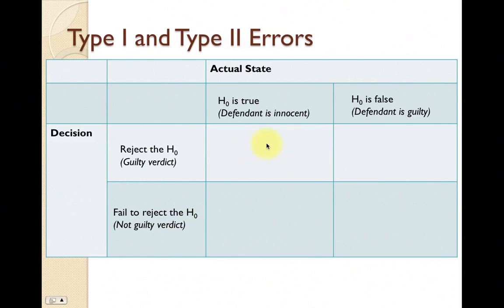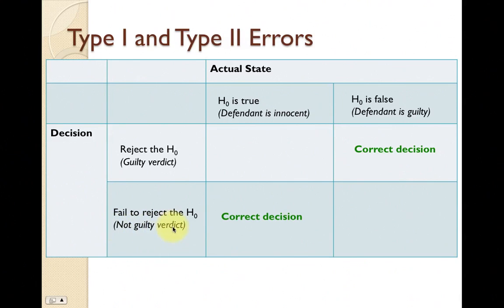Let's think about which boxes represent correct decisions. If the defendant is truly guilty and the jury gives a guilty verdict, that's correct. Similarly, if the defendant is truly innocent and the jury gives a not guilty verdict, that's correct. In hypothesis testing terms: if the null hypothesis is false and we rejected it, that's correct; if the null hypothesis is true and we fail to reject it, that's also correct.